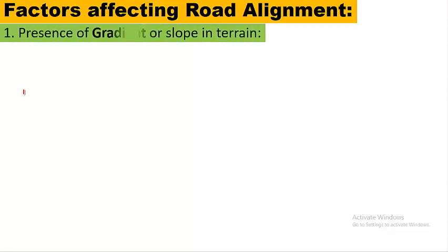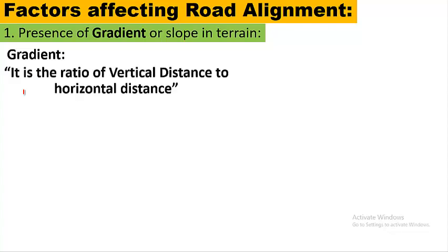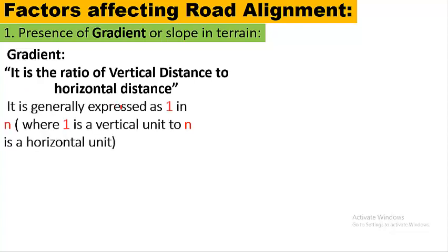Now, the first factor affecting road alignment is the presence of gradient or slope in terrain. This is the most important factor. Gradient is the ratio of vertical distance to horizontal distance — in other words, slope. It is normally expressed as 1 in N, where 1 is the vertical unit and N is the horizontal unit.